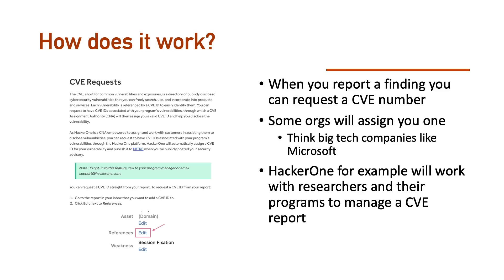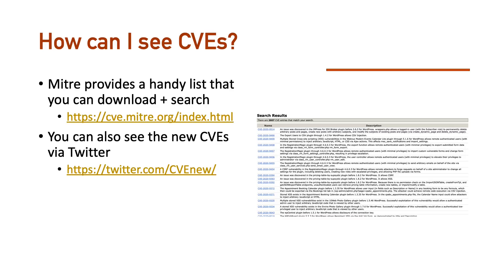A single bug can exist across many different organizations, and CVEs are public — you can read them. When you report a finding you can request a CVE number. Some organizations will assign you one themselves — for example, if you report a bug to Microsoft in Office, they'll assign you a CVE. Something like HackerOne is also able to assign these numbers and will work with researchers to manage a CVE report. They have a help section that discusses the process.